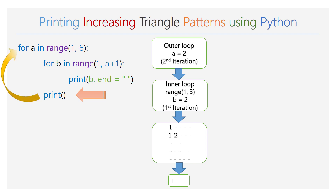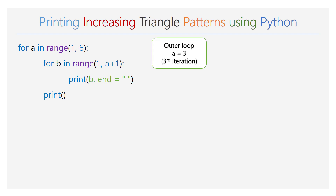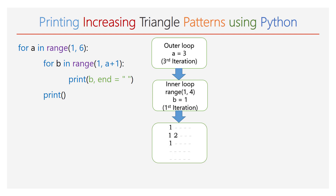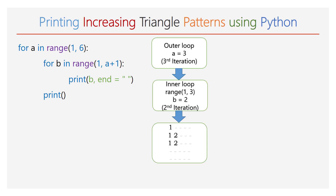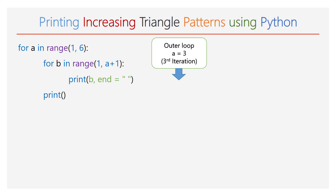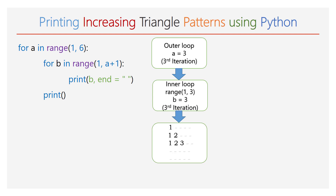Again, the execution goes to the first line. The value of a will be incremented to 3. The range of b will be 1 to 4, so the inner for loop will iterate for 3 times. During the first iteration you can see number 1 in the third line. In the second iteration, the value of b will be 2, so number 2 is printed. Next, the value of b will be 3, so you can see number 3. In the third line, the numbers 1, 2, 3 are printed. Next, the empty print function is executed and the cursor takes a new line.